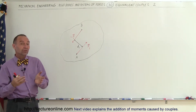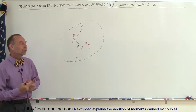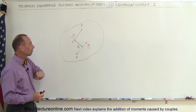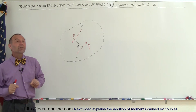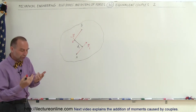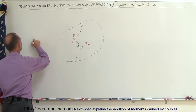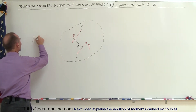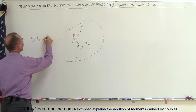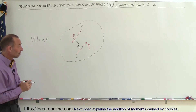Here again we have two vectors. They're equal in magnitude, pointing in opposite directions — we have F1 and negative F1. The negative simply means it's in the opposite direction. They're distance d1 apart from one another, so the couple formed by that, the magnitude of the couple — let's call it M sub 1 — is simply the distance between them times the magnitude of each of the two vectors.